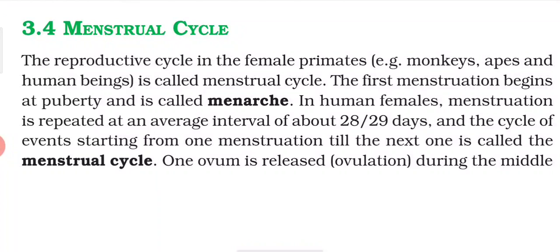The first menstruation begins at puberty and it is called Menarche. Whenever the first Menstrual Cycle starts at the age of 12 to 14 years, that first Menstrual Cycle is known as Menarche. So whenever puberty starts, the first Menstrual Cycle begins, and that is known as Menarche.